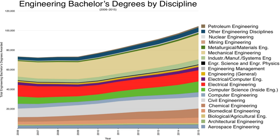In Hong Kong, engineering degree programs are offered by public universities funded by the University Grants Committee. There are 94 UGC-funded programs in engineering and technology offered by City University of Hong Kong, the Chinese University of Hong Kong, the Hong Kong Polytechnic University, the Hong Kong University of Science and Technology, and the University of Hong Kong. The Faculty of Engineering of the University of Hong Kong has five departments providing undergraduate, postgraduate, and research degrees.